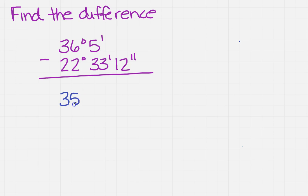So that would be 35 degrees. Now remember how many minutes are in a degree - there are 60 minutes in a degree, so 60 plus 5 is 65.